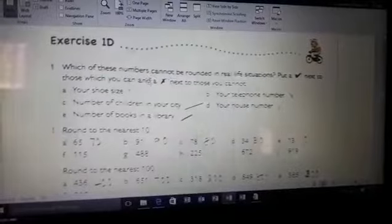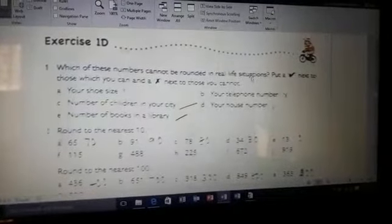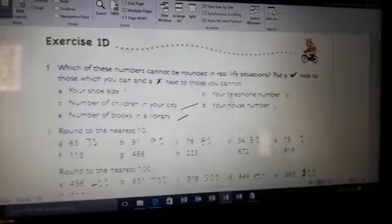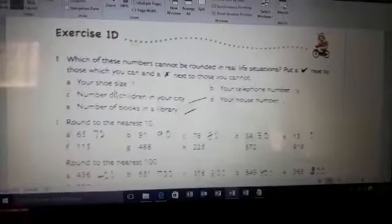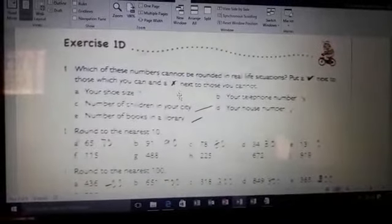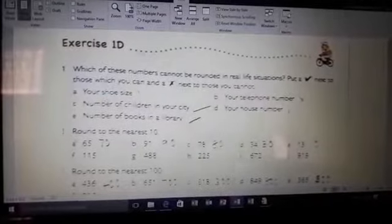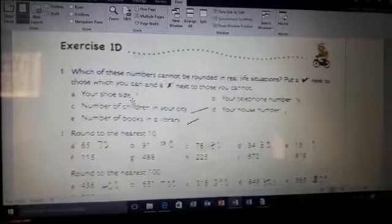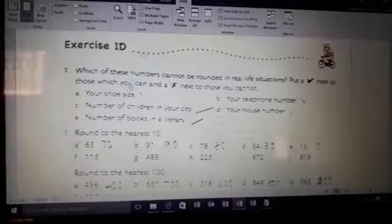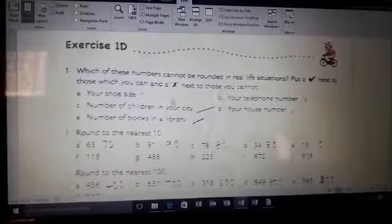Now see the exercise. Which of these numbers cannot be rounded in real life situations? Some of the situations are given, which can be rounded, which cannot be rounded. Like your shoe size, we cannot round it to the next number or the nearest number.